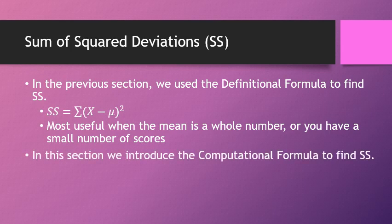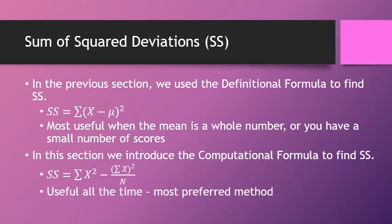So in this section, we're going to introduce the computational formula to find sum of squares. It's: sum of squares is equal to summation of x squared — so we're going to have an x squared column and sum that up — minus the summation of x, squared, divided by n. I typically use the computational formula for everything. It's useful all the time. In any circumstances, it's the most preferred method.